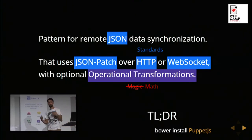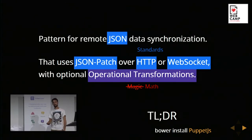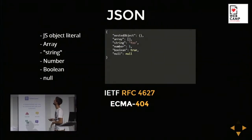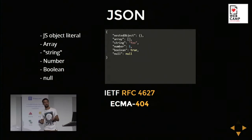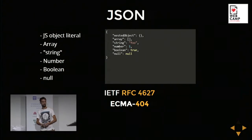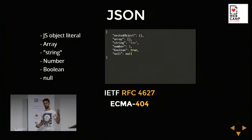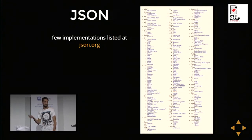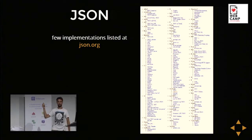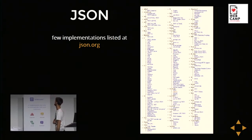I'd like to start from the bottom up — from JSON itself. But in case you'd like to play with it right now, or you missed something, you can go to GitHub or Bower and install the PuppetJS library that covers the entire flow for you. Just to recall: JSON is a JavaScript object literal that may contain nested objects, arrays, booleans, strings, and nulls. It has its own standard on IETF and ECMA, and a variety of implementations — you can go to json.org and pick one from the list that fits you best.